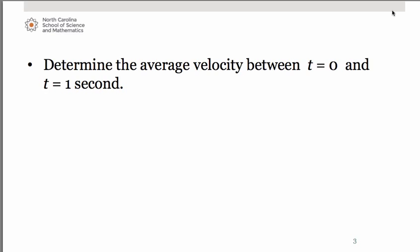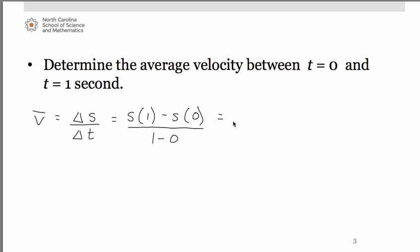You might remember that average velocity is really a slope calculation. We can use the symbol v bar and average velocity is always change in position over change in time. So in this case we need to calculate the position at one second minus the position at zero seconds and divide that by one minus zero. So I'll allow you to substitute the values in. You should be getting 69 and 30. So for this first answer we get 39 feet per second.